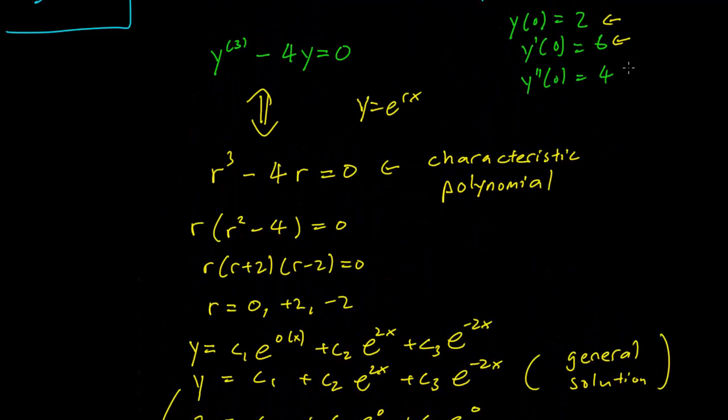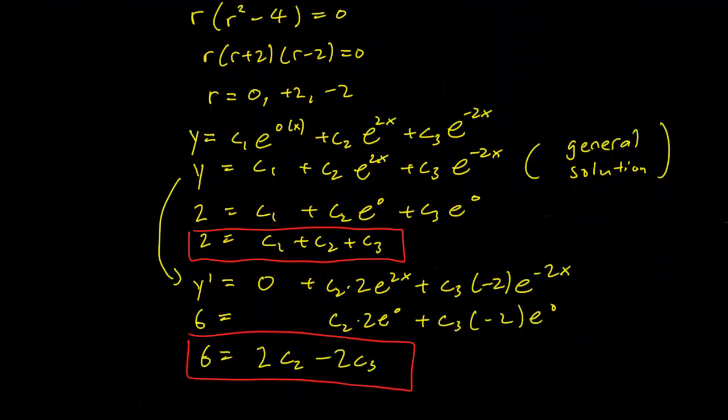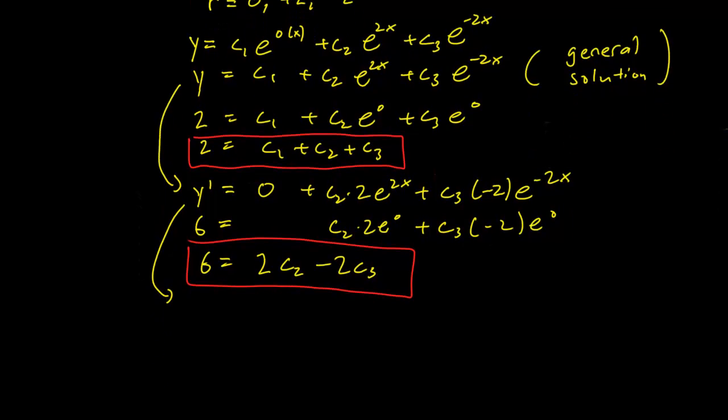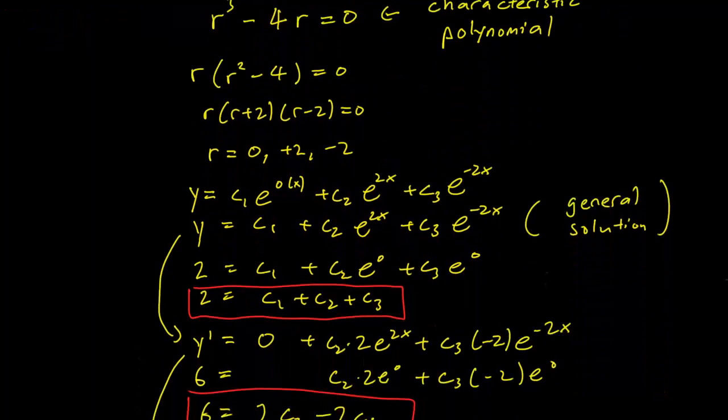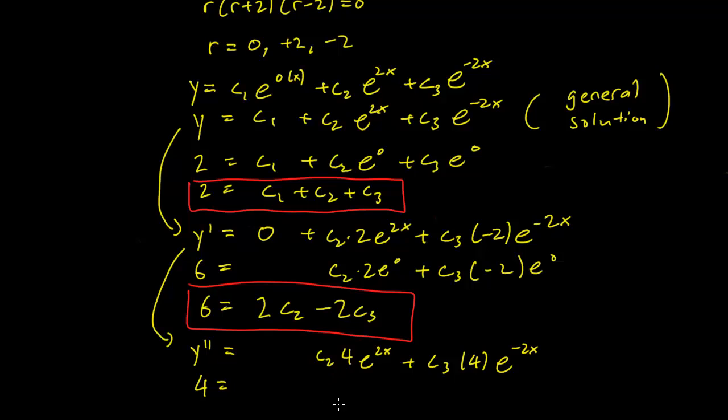Our third piece of information deals with the second derivative. So we need to take the derivative of this equation to get y''. So we have c₂·4e^(2x) + c₃·4e^(-2x), since -2 multiplied by -2 equals 4. And our third piece of information tells us that when y'' is 4, x equals 0. And we have 4 = c₂·4e^0 + c₃·4e^0.